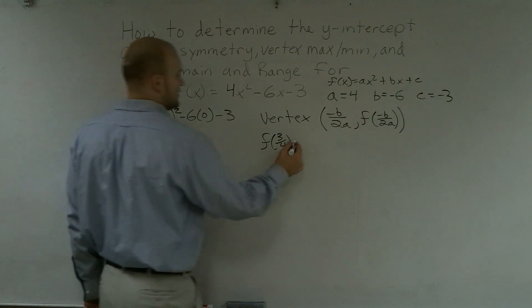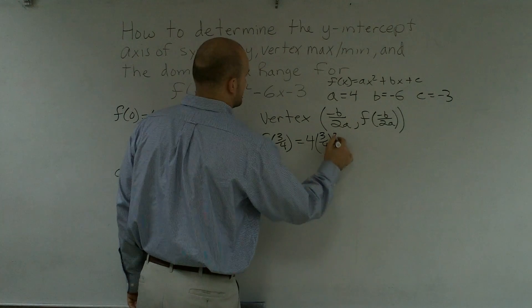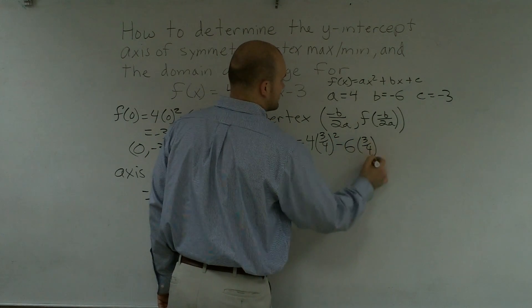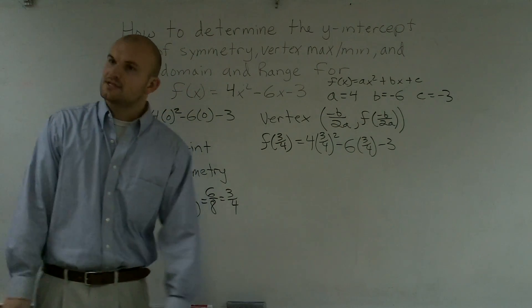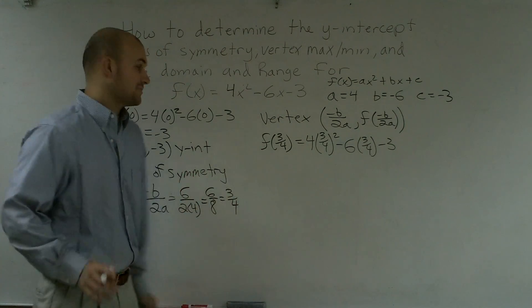So f(3/4) is going to give me 4 times (3/4)² - 6 times 3/4 - 3. Alright, and I know it gets fractions. I know everybody wants to convert to decimals, but if we just work on this, we can get through it.